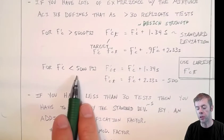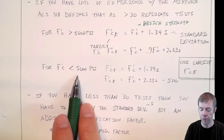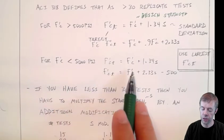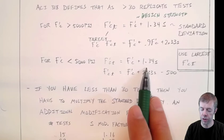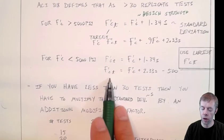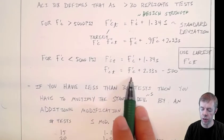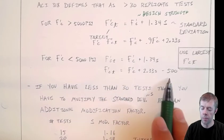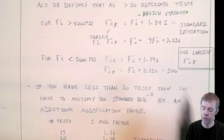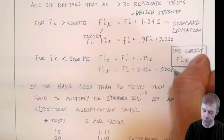If your F'C happens to be less than 5,000 psi, then you're going to use this equation. It's the same one as before. F'C, your design strength, plus 1.34 times your standard deviation minus 500 psi.